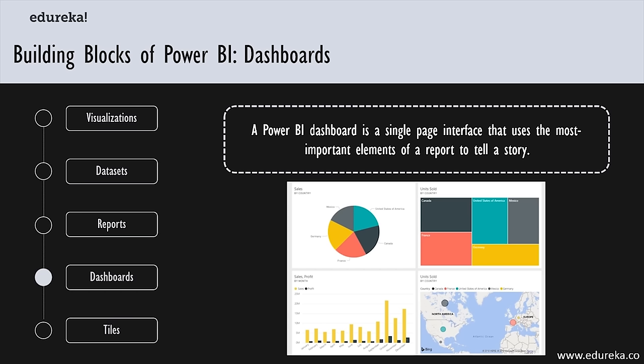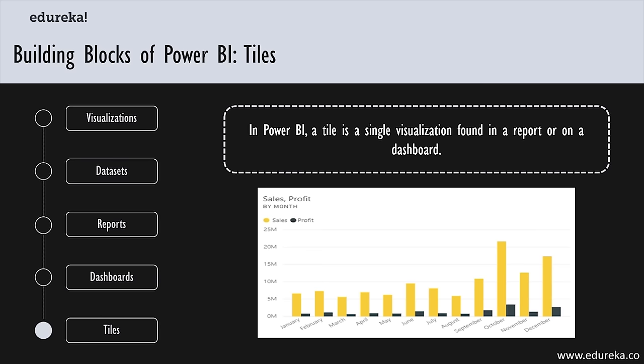Because a dashboard is limited to one page, it contains only the most important elements of that story. In Power BI, a tile is a single visualization found in your report or on a dashboard — the rectangular box that contains each individual visual. Power BI gives you the freedom to move or arrange tiles so you can present the data the way you want.